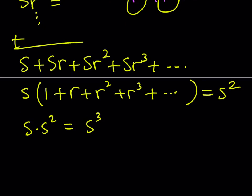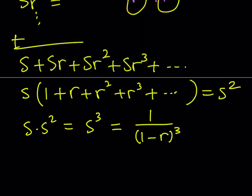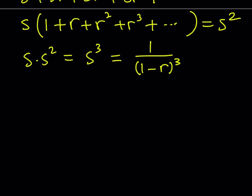That pretty much brings us to the end of the first method, but I told you I was going to show you the second way. The second method is really cool because it involves some calculus. So here's our second method for finding the sum inside the parentheses, which will then be multiplied by s to get the answer.